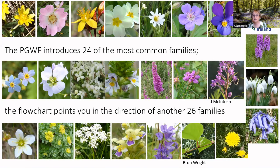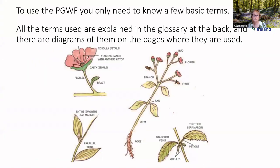The pocket guide introduces 24 of the most common families, each represented by one species and one picture, and the flow chart points you toward another 26 families, so the pocket guide covers about 50 of the common and largest families to start you off. To use it, you only need to know a few basic terms — all explained in the glossary at the back, with diagrams on pages where they are used. Like any new subject or language, there are things you will need to learn, but the pocket guide keeps things simple and eases you into botanical terms.